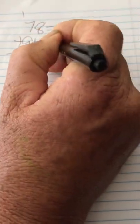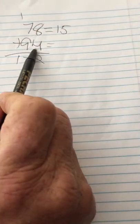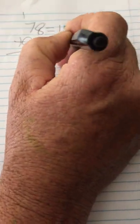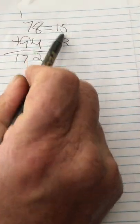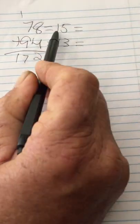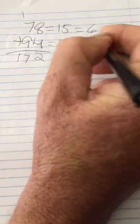We're going to take these two top numbers and add them together. 7 plus 8 equals 15. Take the next number, 94, and add those together. 9 plus 4 equals 13. Now let's take these two numbers and reduce them to single digits by adding them together. 1 plus 5 equals 6. 1 plus 3 equals 4.